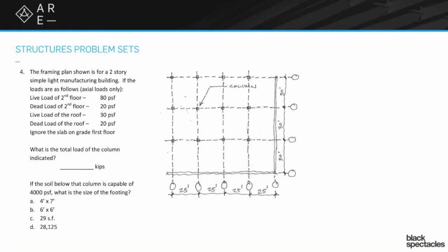We have two basic questions here. The first one is what is the total load of the column that's been indicated. What's the first thing we need to figure out? Well, we need to know what the loads are, so we're going to add those up. But the big thing to understand is how does the load even get to the columns.